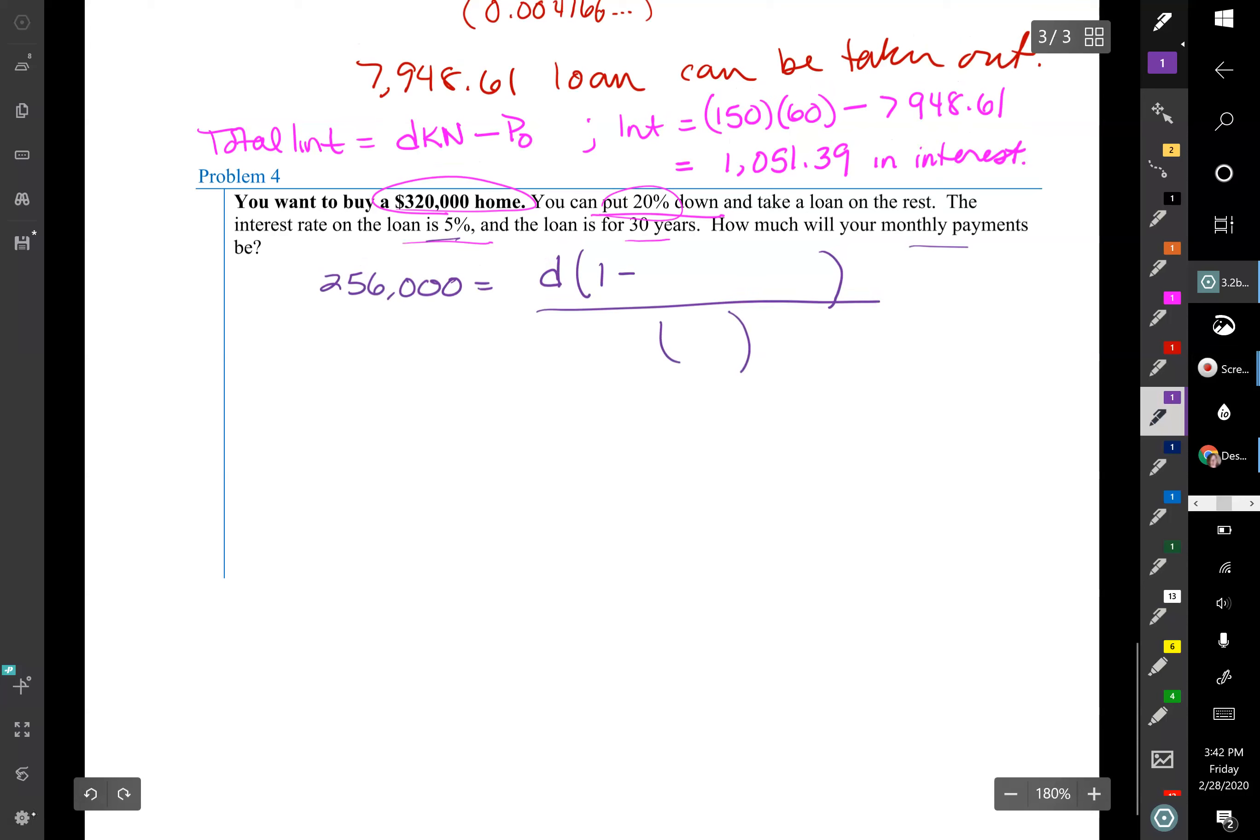Okay, so we can start filling this in. We're gonna have 1 minus parentheses 1 plus 0.05 over 12, and that's raised up to the negative 30 times 12. And just be careful about using parentheses where needed and hitting enter in between. So for an in-between step I would crunch all those numbers. I'm gonna get $256,000 and then equals D times 186.2816 and so forth. And I just leave that in my calculator.